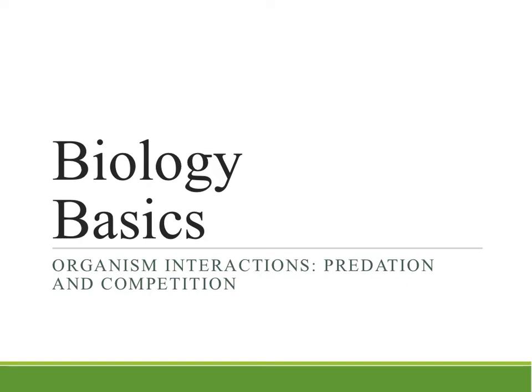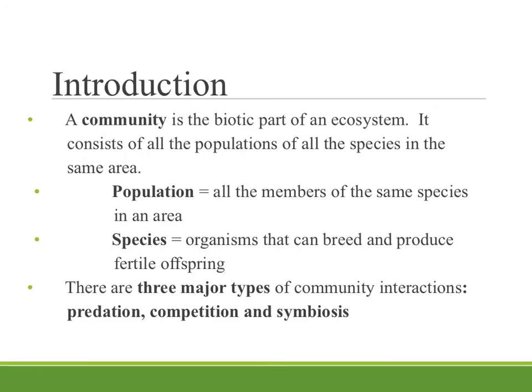In this video, I want to talk about two ways that organisms interact within an ecosystem: predation and competition. Within an ecosystem, we have a community, and that's all of the biotic part of the ecosystem — all of the organisms from large to small that make up that ecosystem.